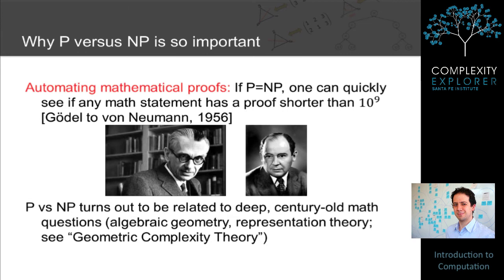P versus NP is not only important in computer science — it's also important in mathematics. This was realized as early as 1956, almost 20 years before P and NP were defined, in a letter from Kurt Gödel to John von Neumann. In today's language, Gödel essentially said: if P equals NP, then one can quickly check if any math statement has a proof shorter than, say, a billion characters, and if it does, use this procedure to find the proof. If not, you can conclude that as a human you'll never find a proof longer than a billion characters, and should give up on that problem.